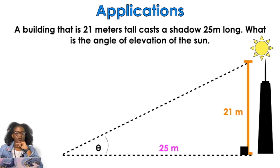A building that is 21 meters tall casts a shadow at 25 meters long. What is the angle of elevation of the sun? So this picture was already drawn for you. That's so nice of them because sometimes you have to draw the picture. Sometimes the picture is given to you. What two sides do I have? I have a 21 and I have a 25. The 21 is what? Opposite, adjacent, or hypotenuse. You say opposite, good job. What is 25? Opposite, adjacent, or hypotenuse? Adjacent, good job.